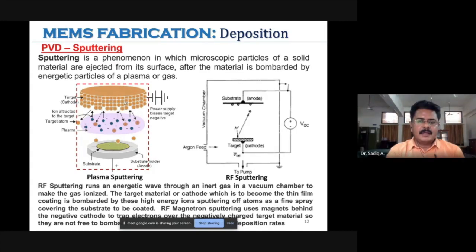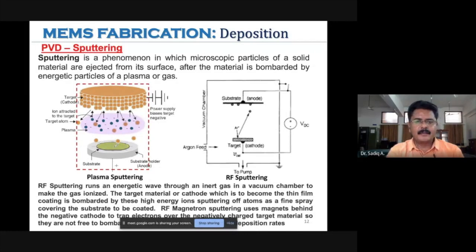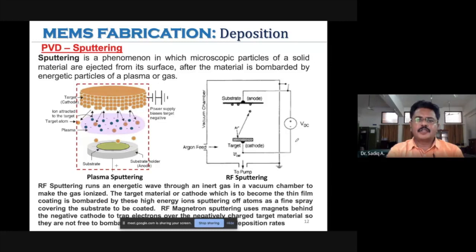There is no chemical reaction in sputtering; the knocked-out material is simply deposited on the surface. As long as the process continues, coatings accumulate layer by layer. This means controlling the thickness of the coated material can be difficult in the sputtering process.